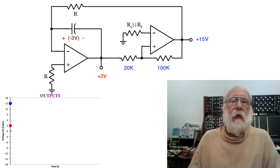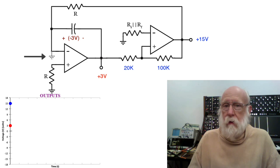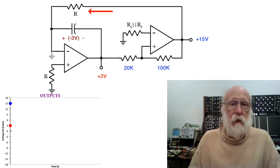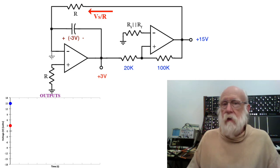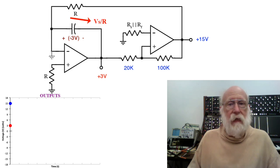Remember that the inverting input of the integrator is at virtual ground, so the current through R, the overall feedback resistor, is simply V sub S, which we assume to be plus 15, divided by R. None of that goes into that input, and so it all has to go into the capacitor.